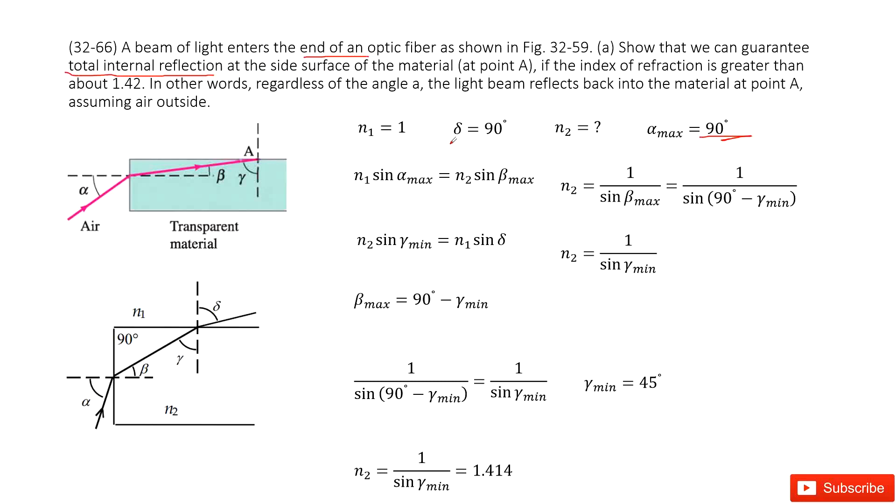So this one, the gamma, alpha, beta, gamma, theta. So this one is 90 degrees. And it also tells you the index of refraction is greater than about 1.42. In other words, regardless of the angle A, the light reflects back into the material at point A.